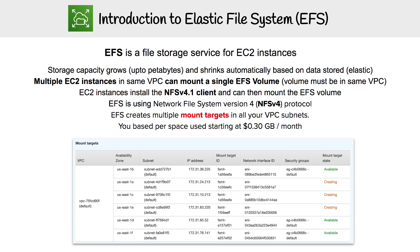EFS is a file storage service for EC2 instances. Storage capacity is going to grow up to petabytes worth and shrink automatically based on your data storage. That's why it has 'elastic' in its name — that drive is going to change to meet whatever demand you are storing.